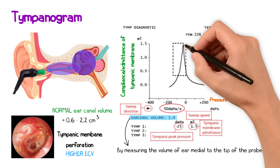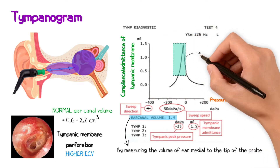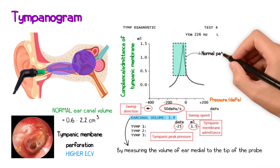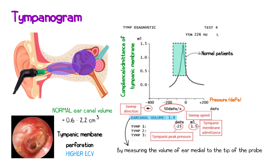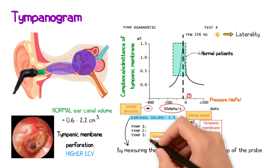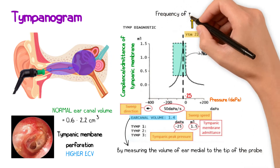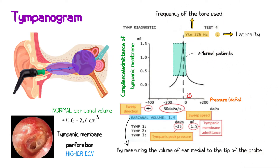Tympanograms often feature a box which represents the area within which a peak would be expected for a normative group of patients. If the peak of the trace is found outside of this box, this suggests an abnormal result. Other information you may find on a tympanogram includes the laterality of the test, the sweep direction and sweep speed, the tympanic peak pressure, and the frequency of the tone used, which is usually 226 Hz.